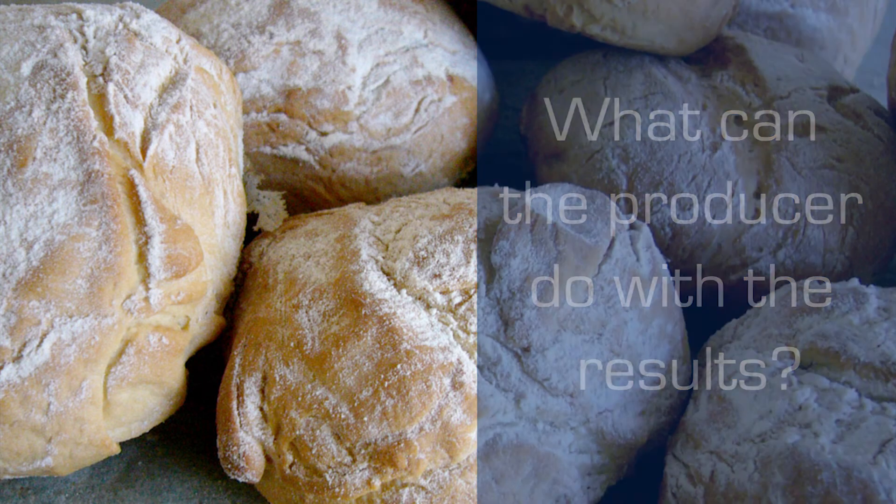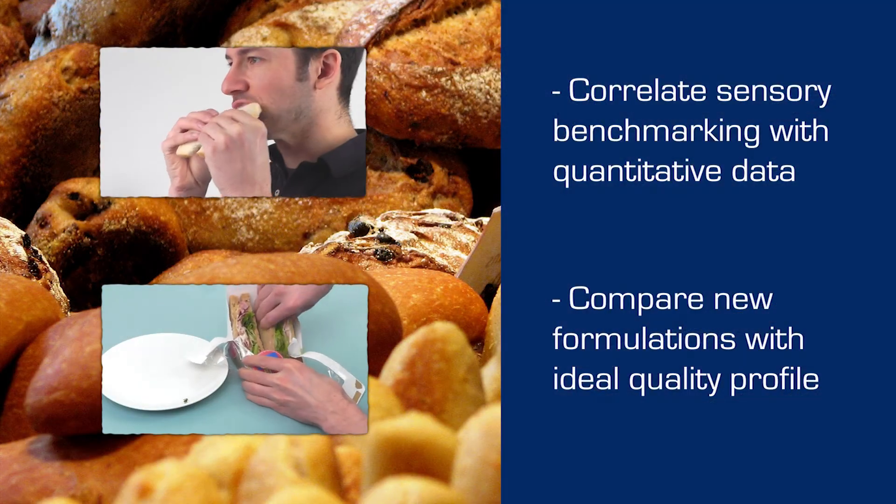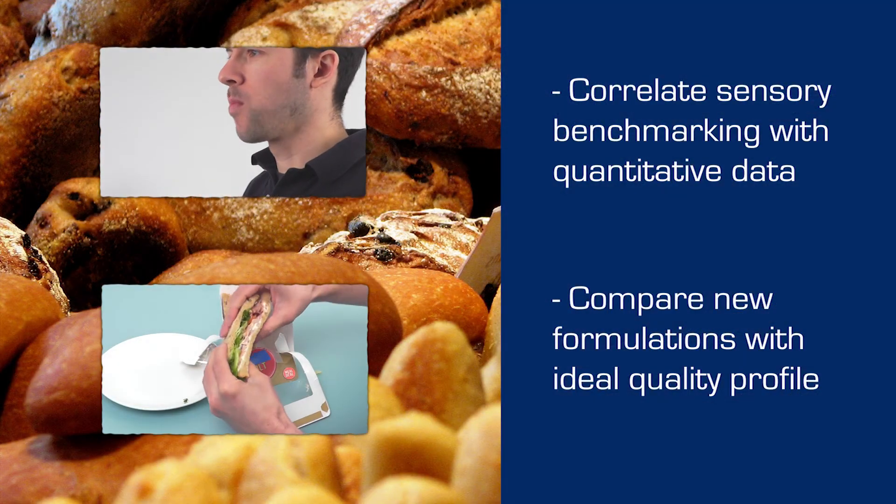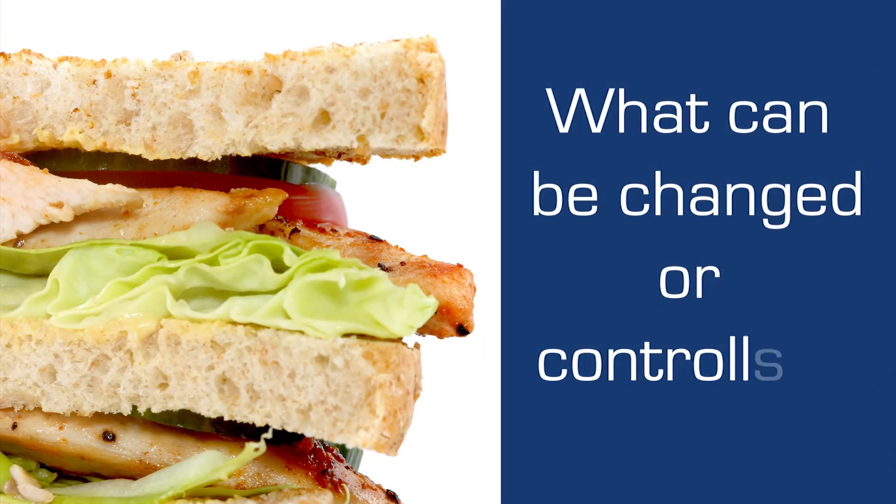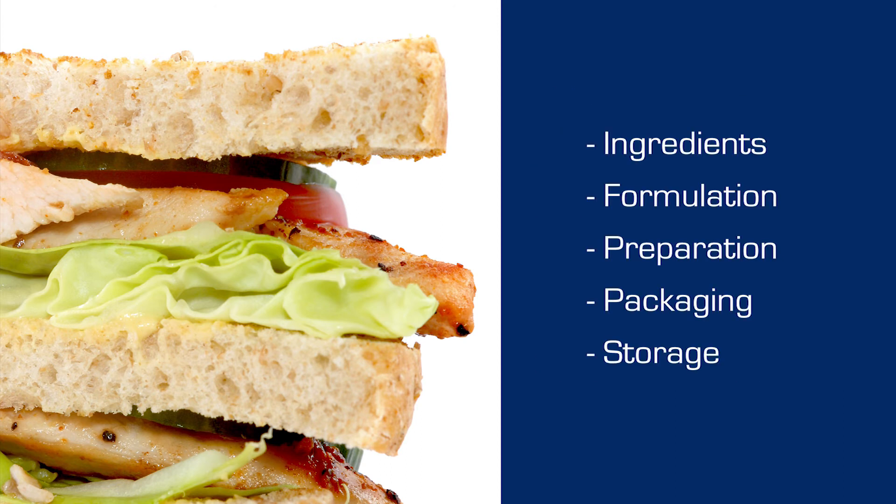Comparisons can be made between samples. Stale bread is measurably firmer than fresh. Analysis of the measured data brings understanding to the effect of variables in the food supply chain and therefore the ability to optimize quality.